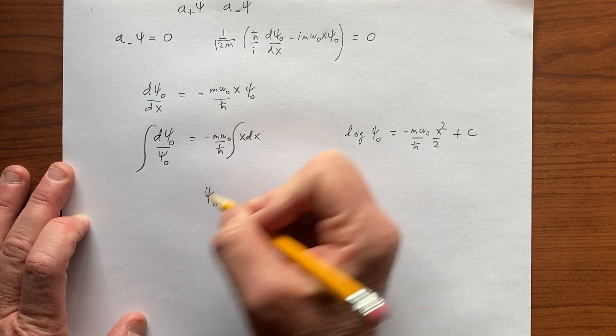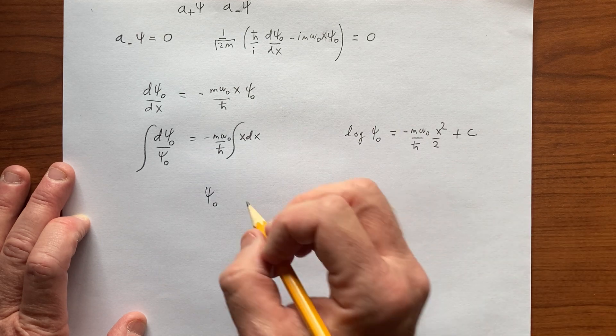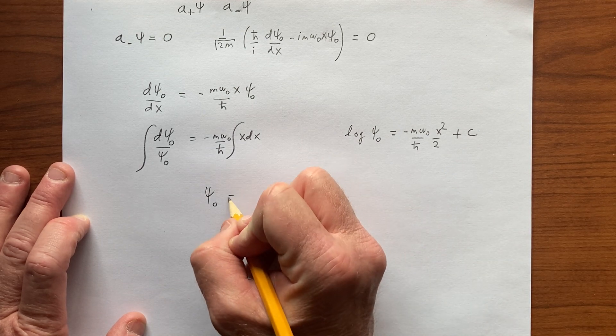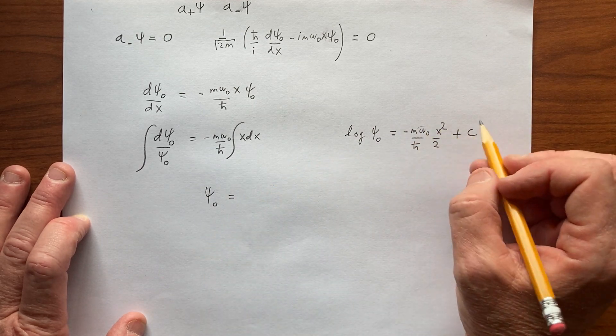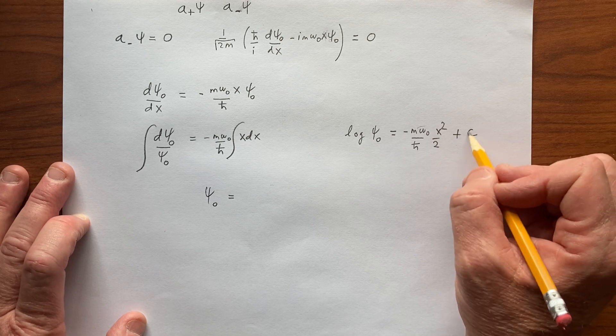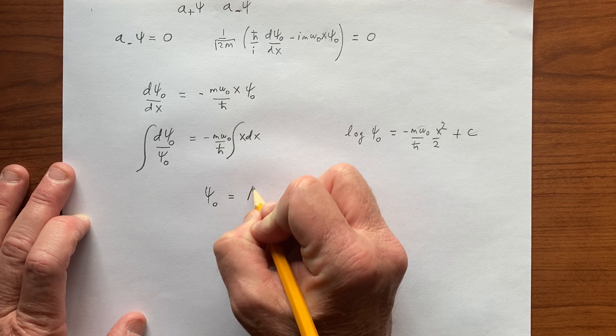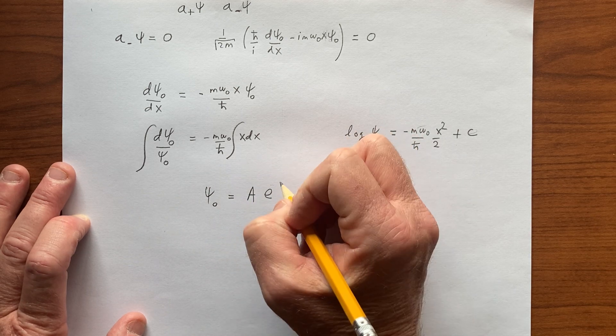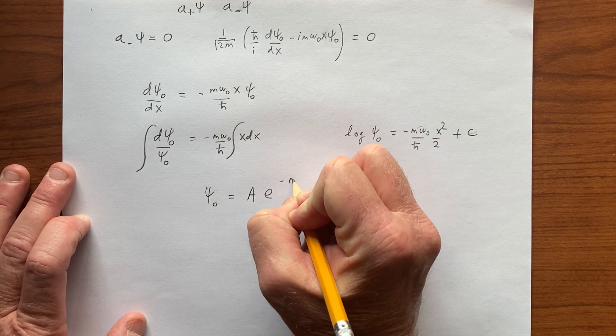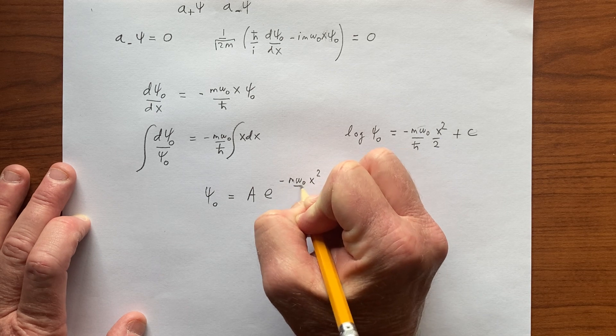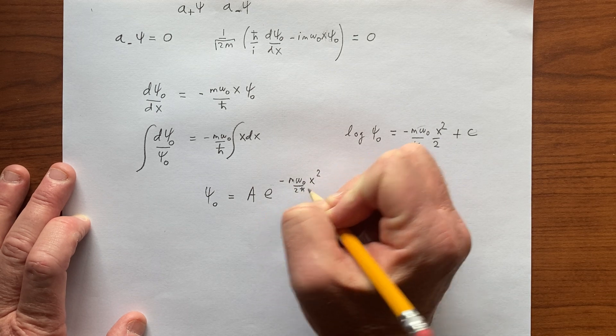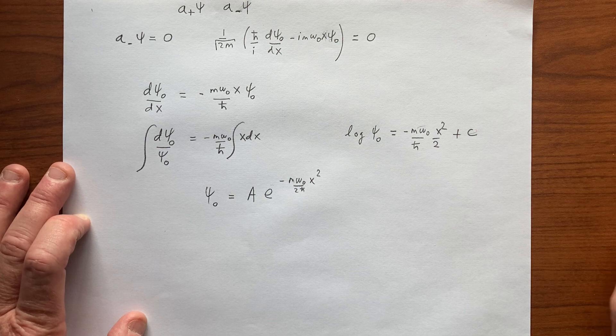And therefore ψ₀, we have to do the inverse of this, which is the exponential, and that means that we have e to the this times e to the this, and we might as well just call that some other constant, so A e^(-m ω₀ x² / 2ℏ) is this function.